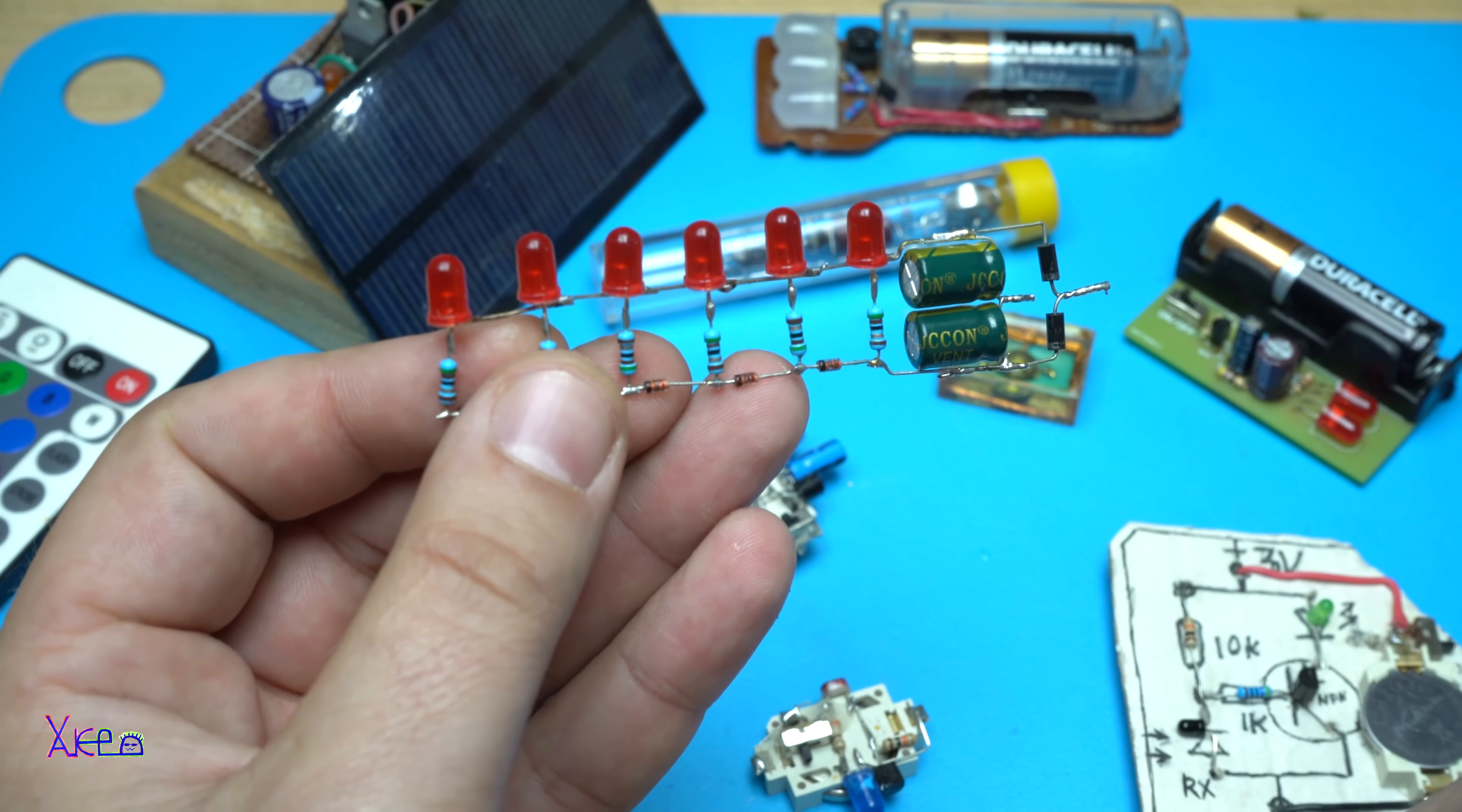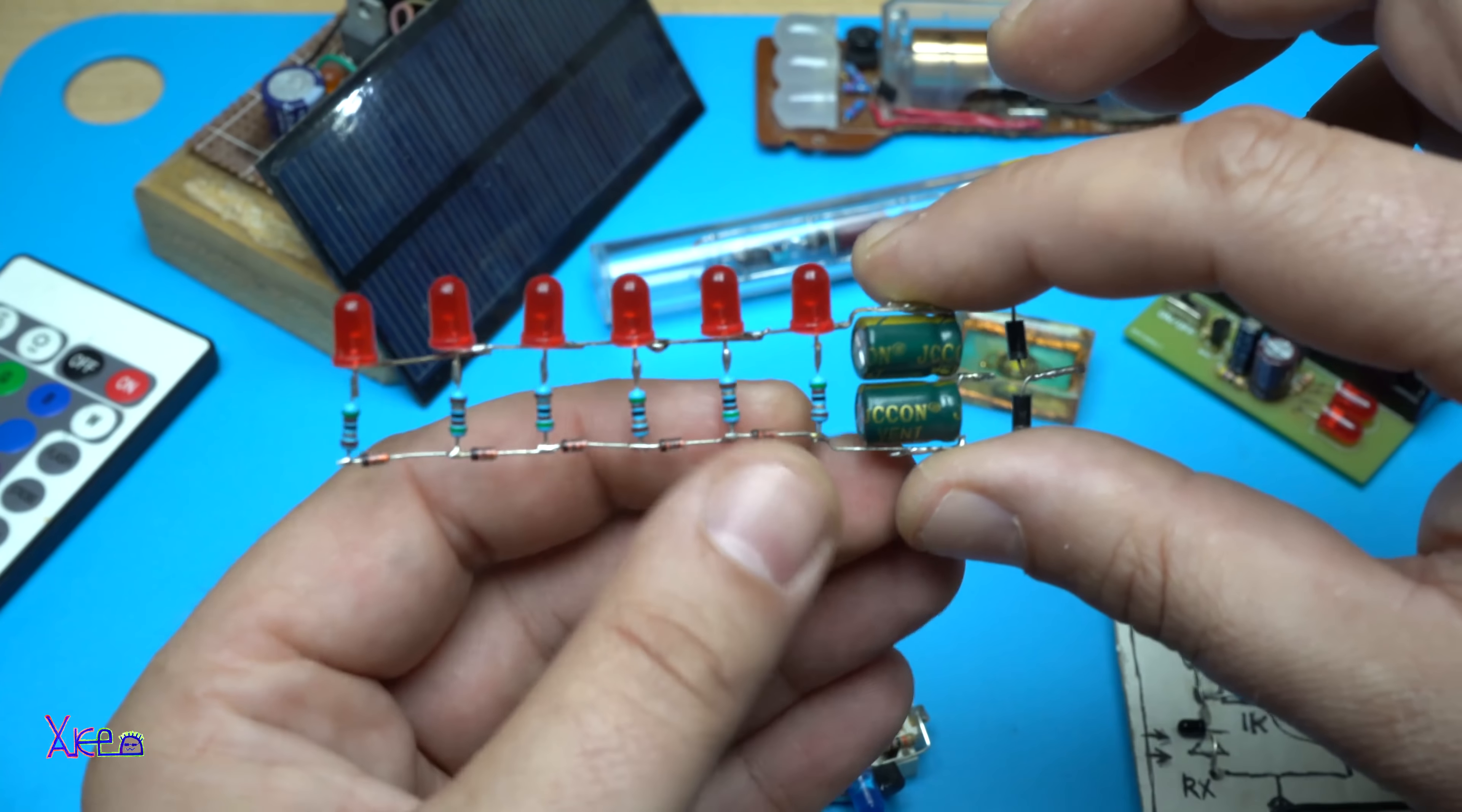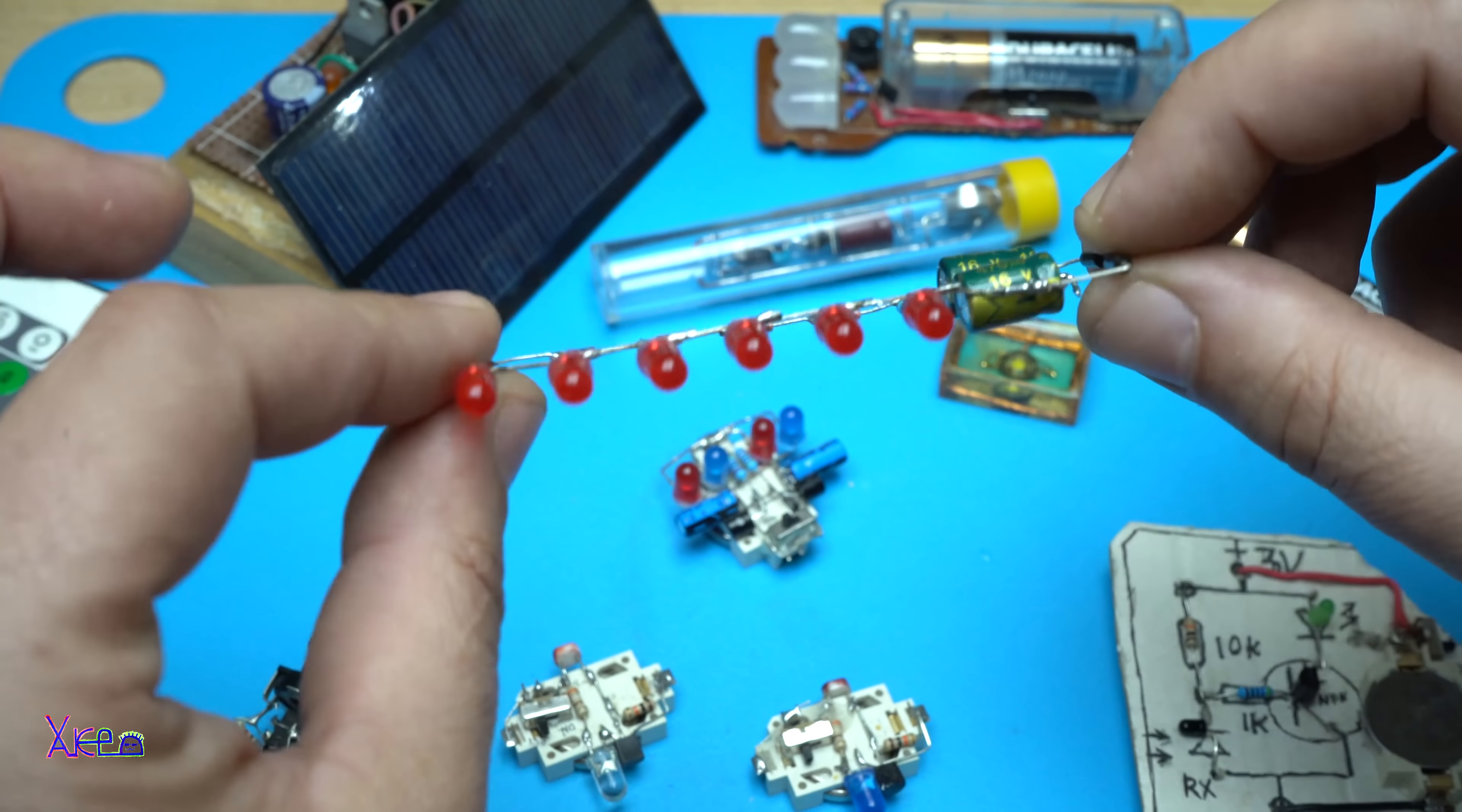Do you remember this? It's a LED V meter without using integrated chip, just the LEDs, resistors, two capacitors and two diodes. Check the link in description so you can make your own.